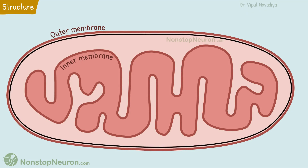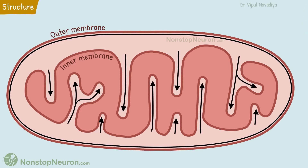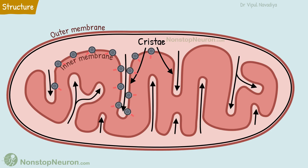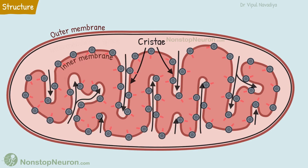The outer membrane is smooth and covers the organelle. The inner membrane is folded to form folds called cristae. It contains oxidative enzymes. Folding of the membrane increases surface area, so that more enzymes can be accommodated in the membrane.